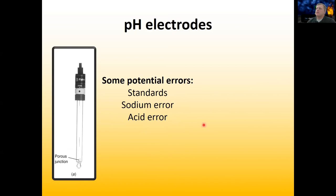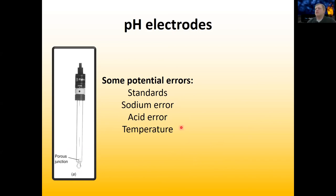You can also get errors associated with temperature. Temperature is going to change the current of the electrodes and also dramatically affect the rate at which sodium can migrate through the glass in the bulb. You generally want to calibrate your pH electrode at the same temperature as the temperature of your solution. If you're measuring the pH of an arctic lake, you should bring your reference standards with you so you can calibrate it there.